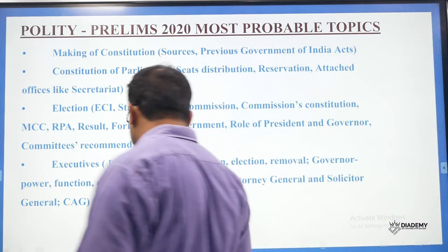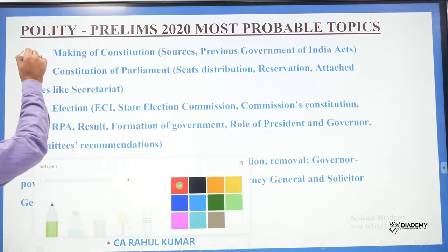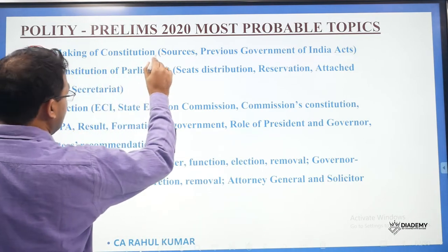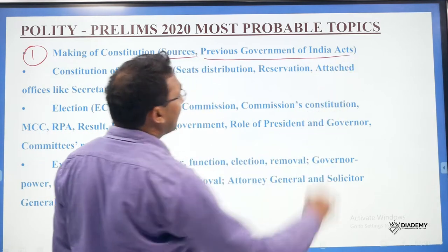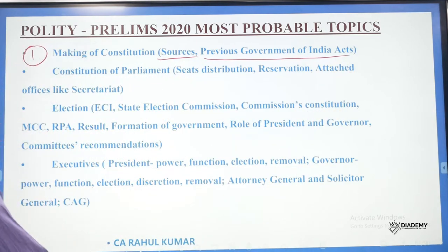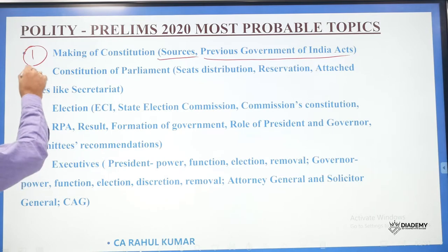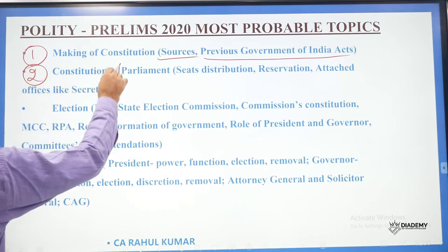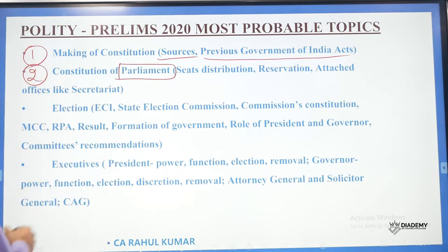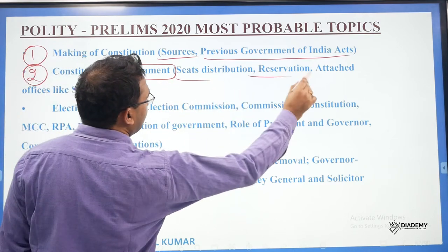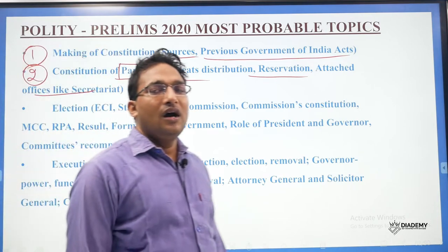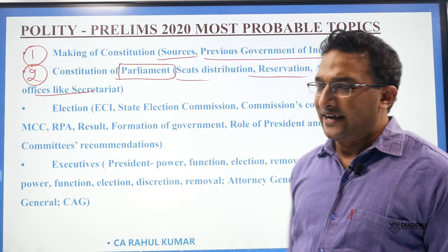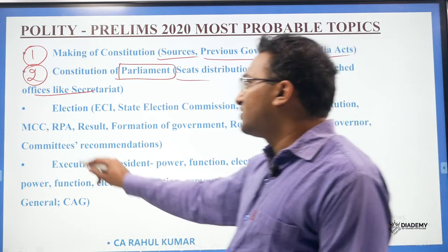The making of the Constitution is always a very important area you need to revise. Sources of the Constitution, previous Government of India Acts, and the important features of those acts. Then the Parliament chapter is very, very important — the seats distribution, reservation, and various provisions about the President, the Prime Minister, and the competition.